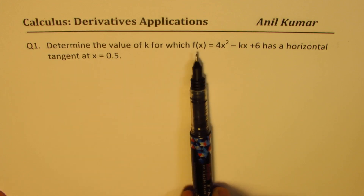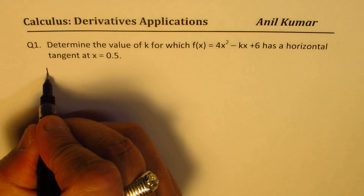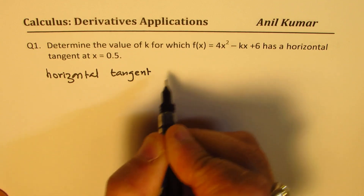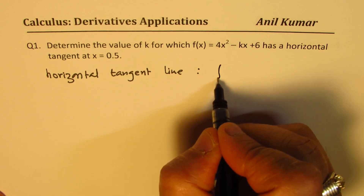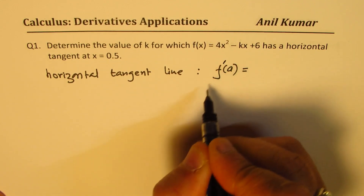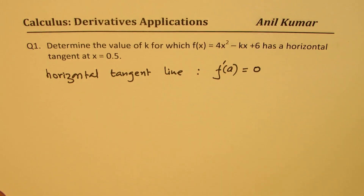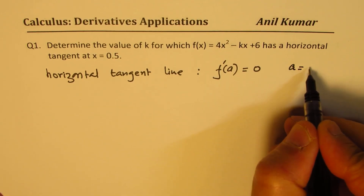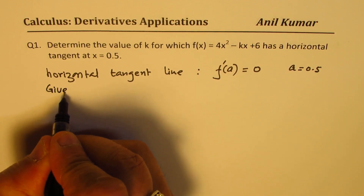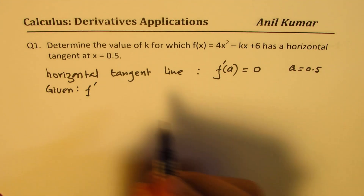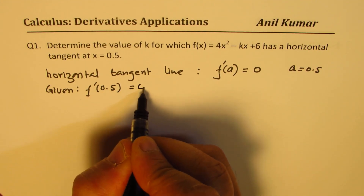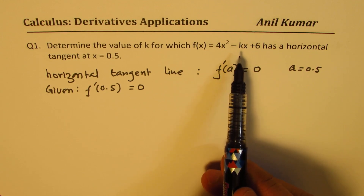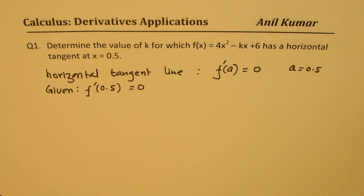The question says: determine the value of k for which the function has a horizontal tangent line. A horizontal tangent line means that at that point a, the slope — f'(a) — is 0. It is already given that x equals 0.5, so a is 0.5. We are given that the derivative of the function at x equals 0.5 is 0, which gives us one equation to find k. There's only one unknown, so from this we should be in a position to solve.